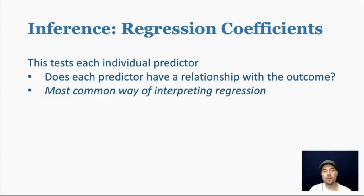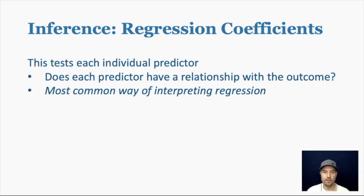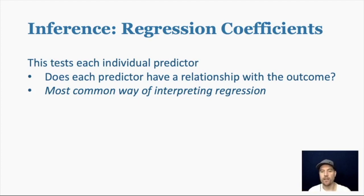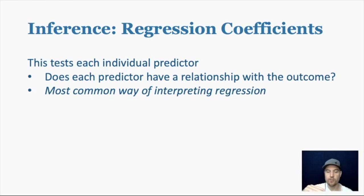Another thing we often want to make inference about is the regression coefficients themselves. What's nice about this is that it tests each individual predictor independently — it asks: does each predictor have a relationship with the outcome? In my experience, it's the most common way of interpreting regression. It tells you specifically what the relationship is between one predictor and the outcome, controlling for the others.